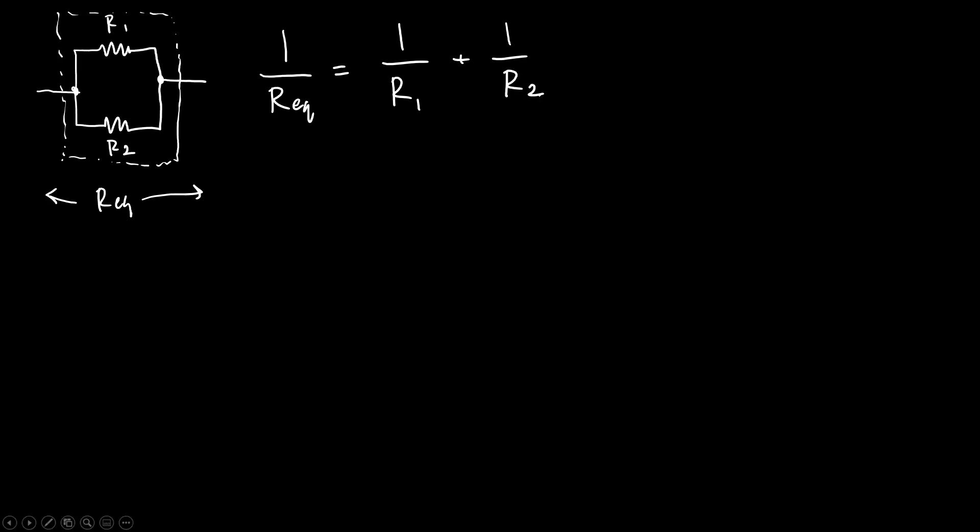And you can rearrange that equation to solve for Req if you want. So Req equals 1 over (1 over R1 plus 1 over R2). Or if you want to write it a little more compactly, you could write it like this: (1 over R1 plus 1 over R2) to the minus 1.